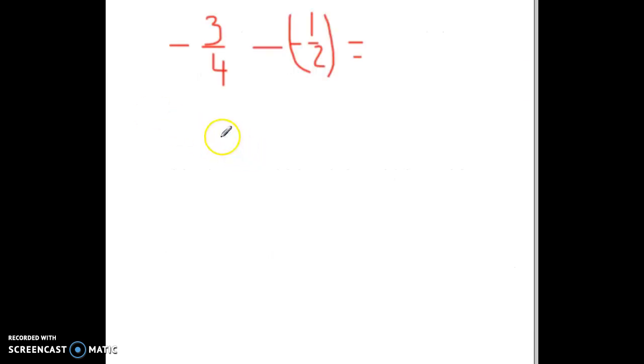So we start out with negative three-fourths minus negative one-half. We change that to negative three-fourths plus positive one-half. Now this is where we still have to remember all the rules for adding fractions. We'll need a common denominator. In this case, it's four.